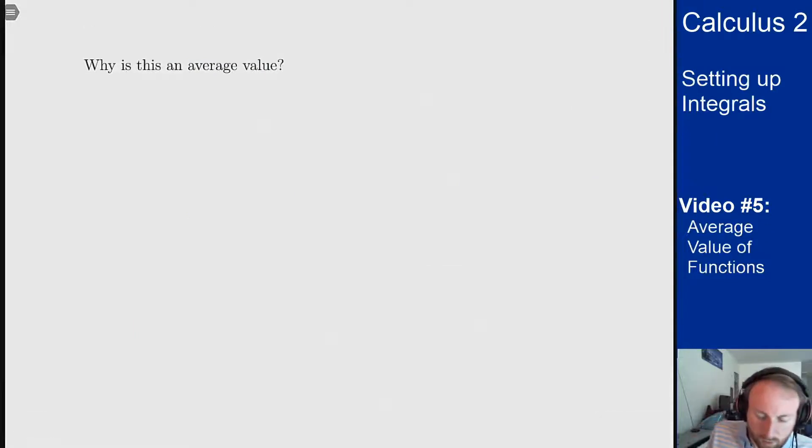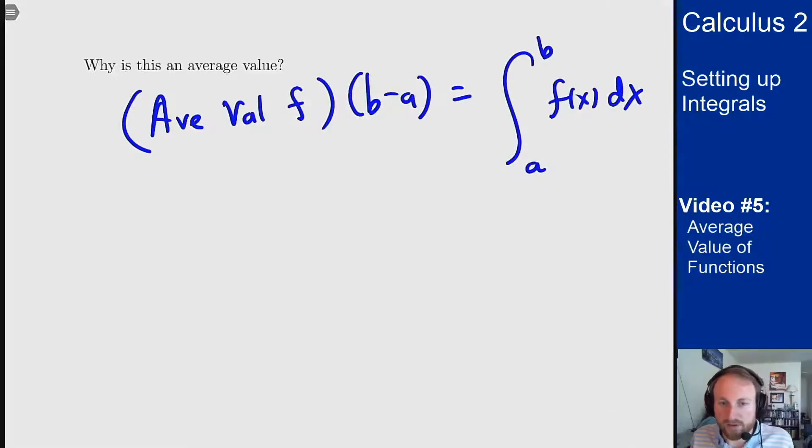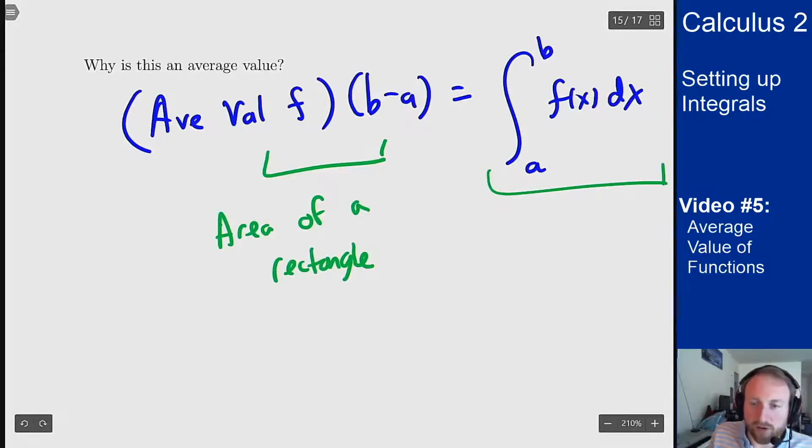So why is this an average value? Well, one way you can think about this average value is the fact that it also satisfies the following relation. So the average value of f times b minus a is the same as the integral over the domain. Right, that's just the expression for average value when I move the b minus a to the other side. So the point here is this here is the area of a rectangle and this here is the area under the graph of f.